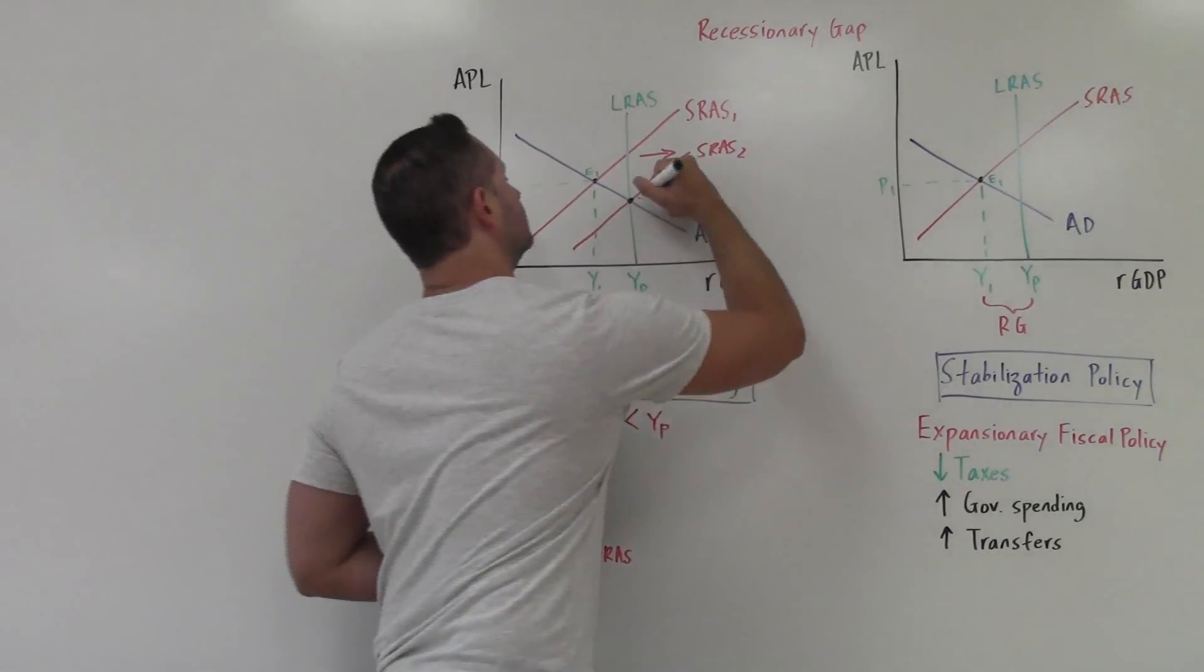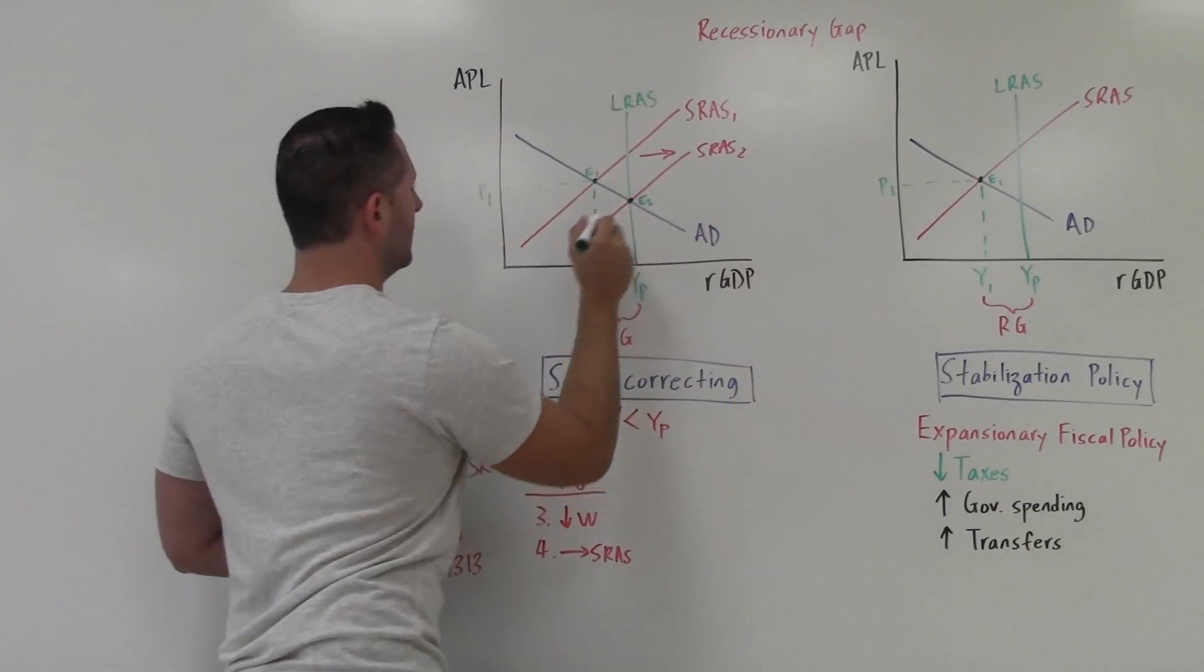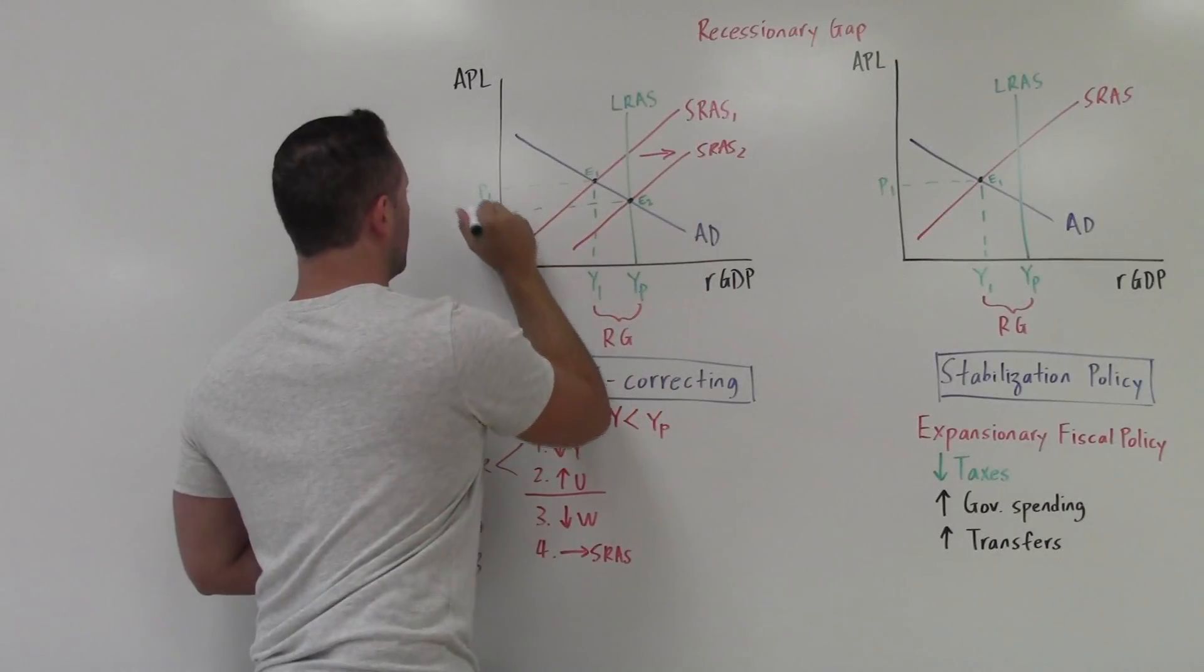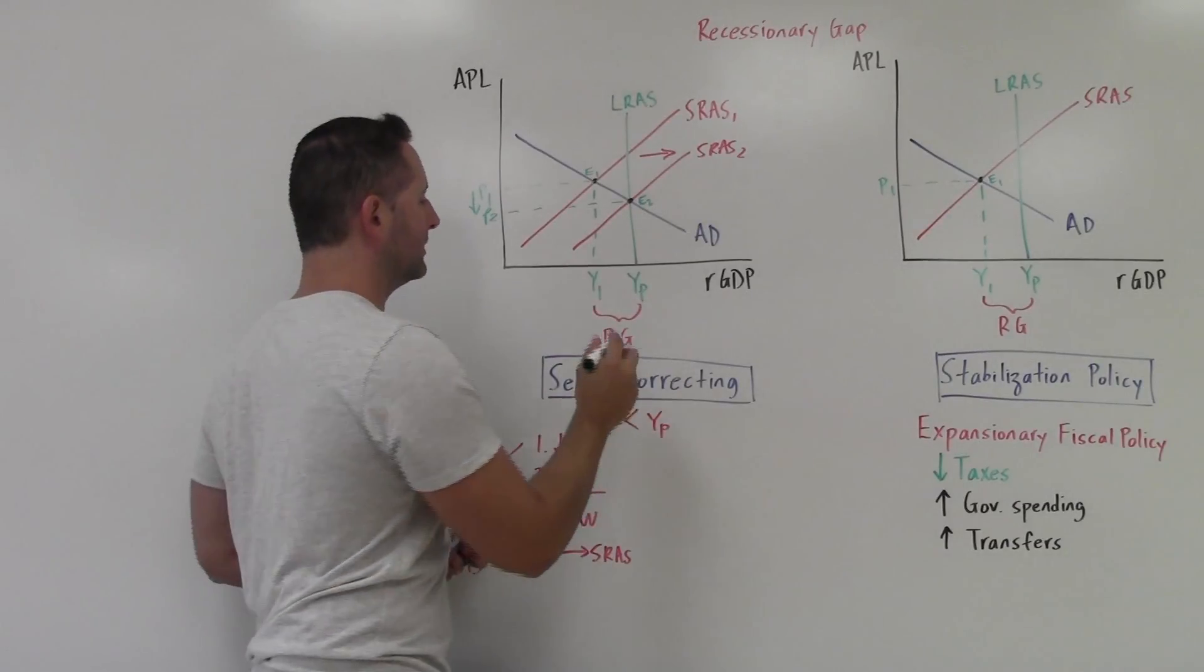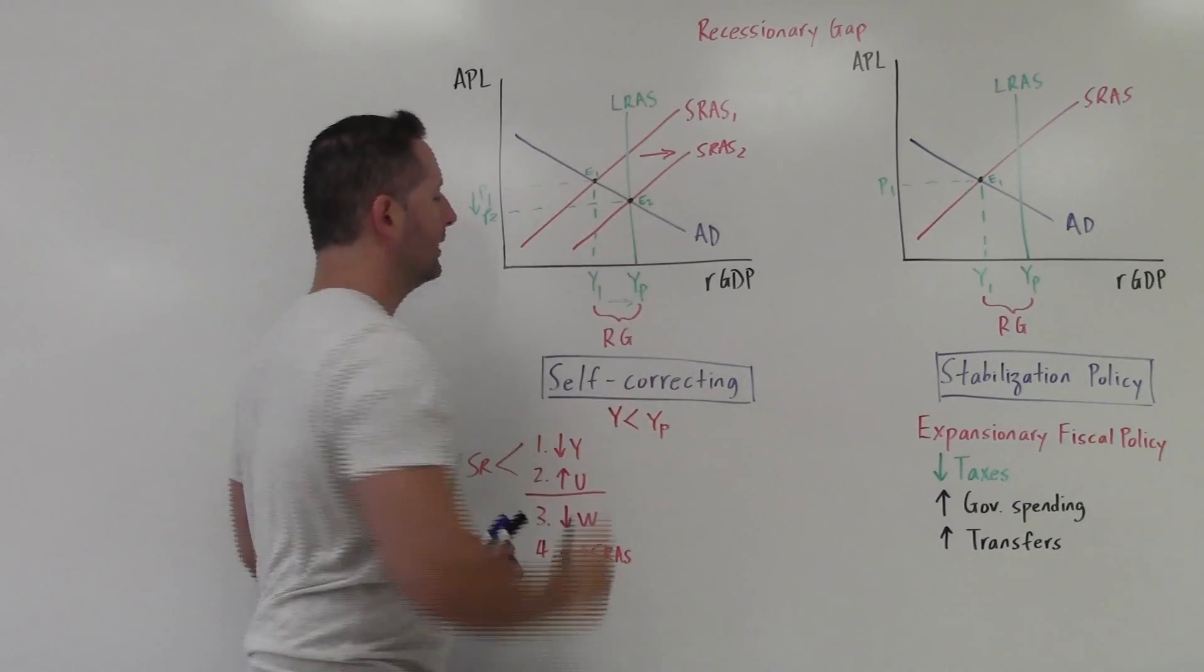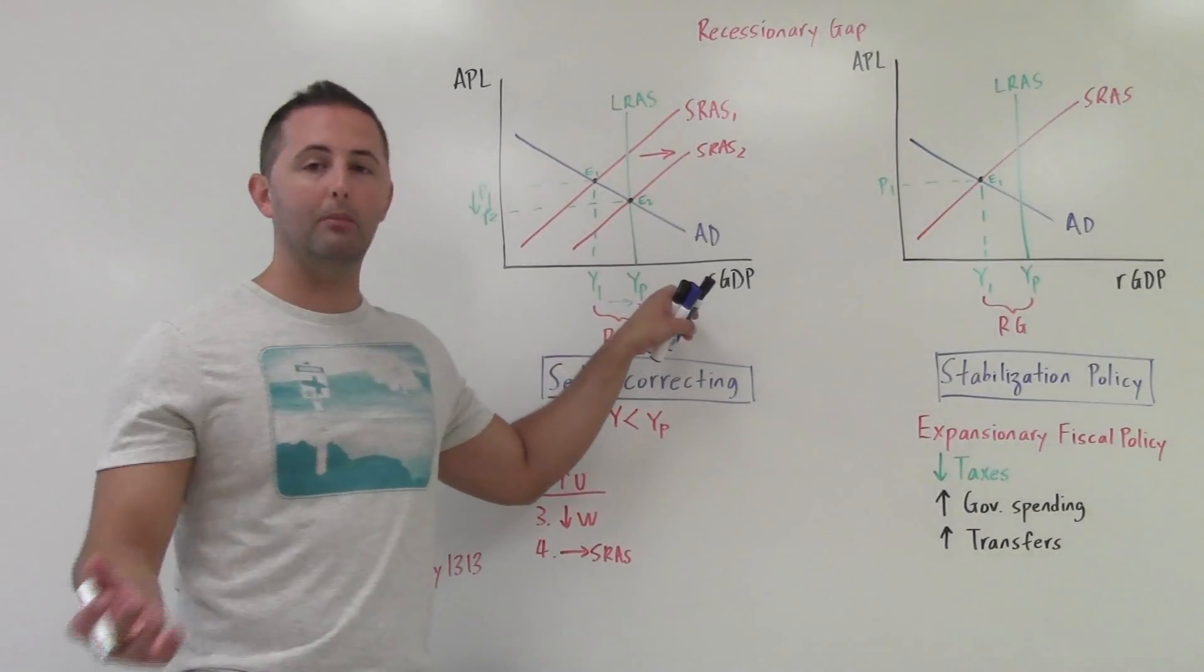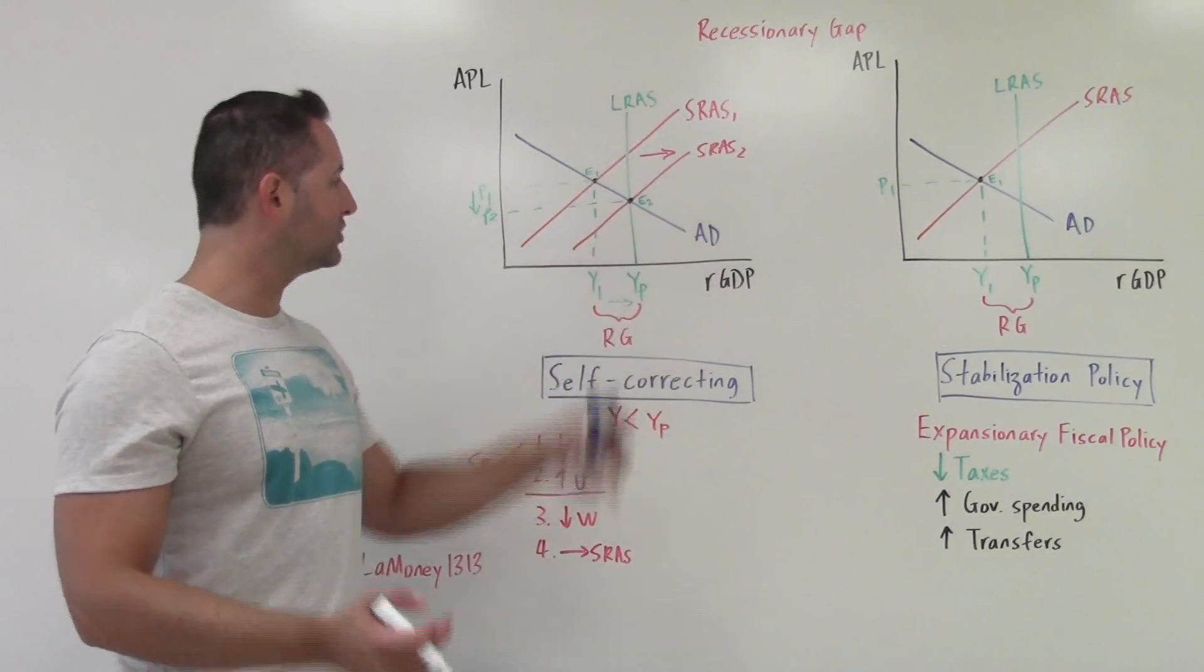We have a falling price level from E1 to E2, and we had increasing output from Y1 to YP. There's no need to relabel YP. YP is potential output, so don't label it Y2, there's no need for that. We are back at potential output.